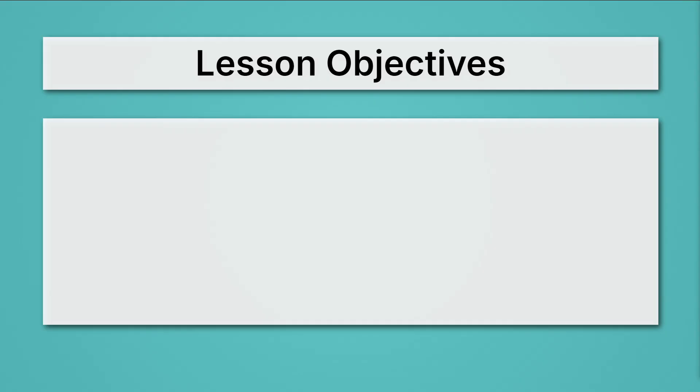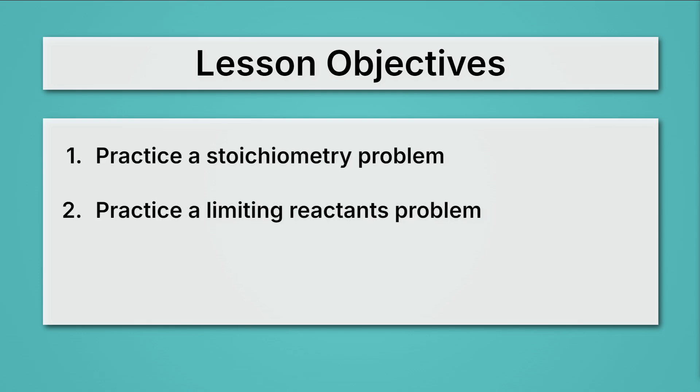Let's take a look at our lesson objectives for this review lesson. First, we'll practice a stoichiometry problem. Then we'll practice a limiting reactance problem. And lastly, we'll practice calculating percent yield. So you can see that we're basically all about practicing your chemical reaction math here.